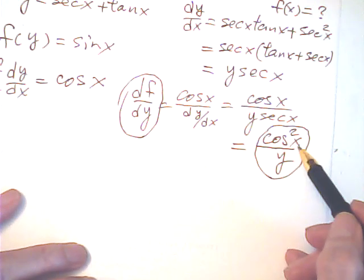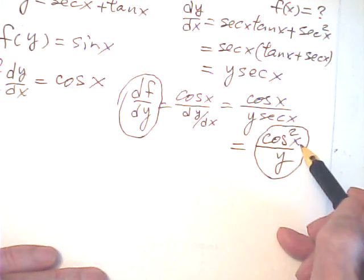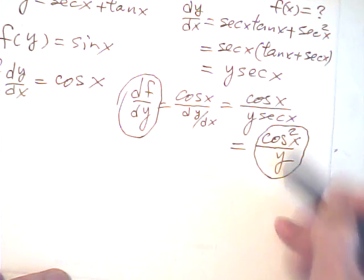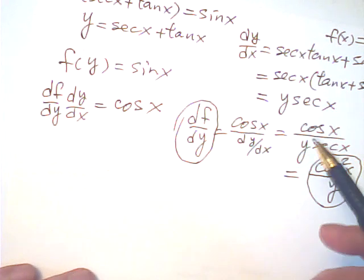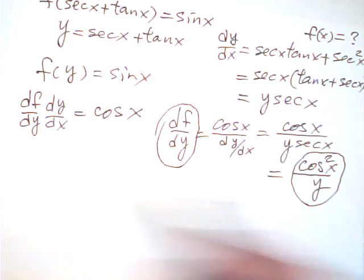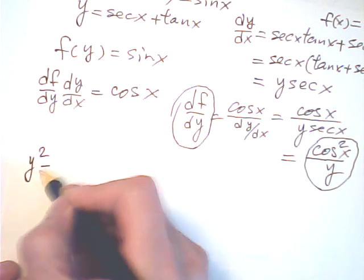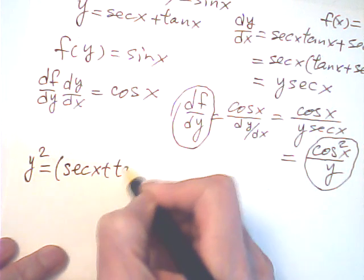Now here we have a problem: df/dy is expressed in terms of x, but we need it in terms of y so we can integrate to find f(y). So we need to find the relation between y and cos²x, and express cos²x in terms of y.